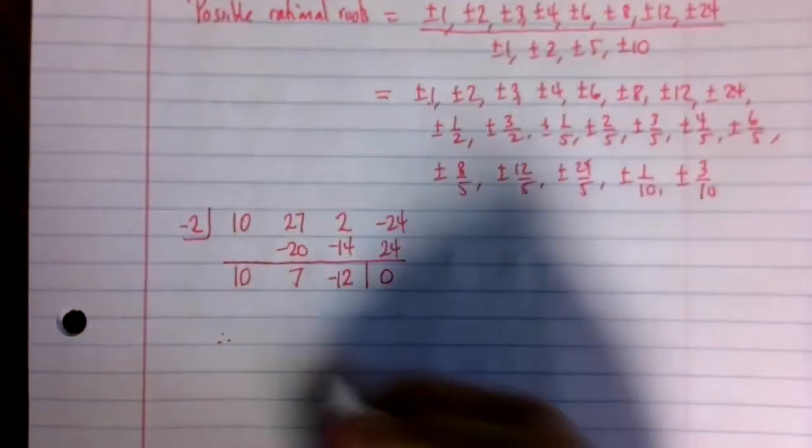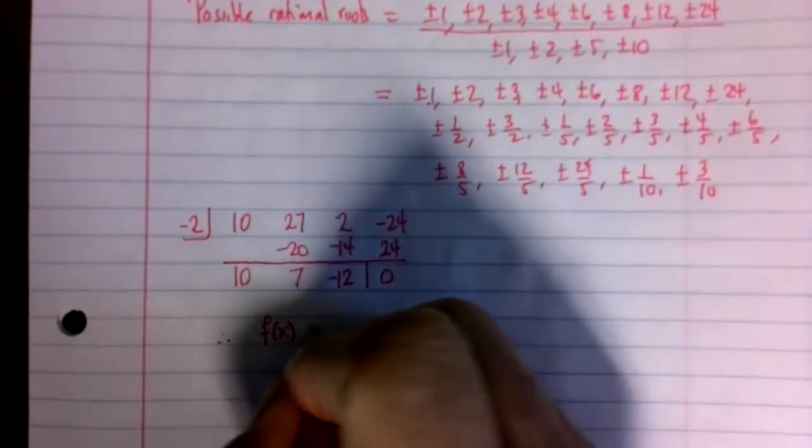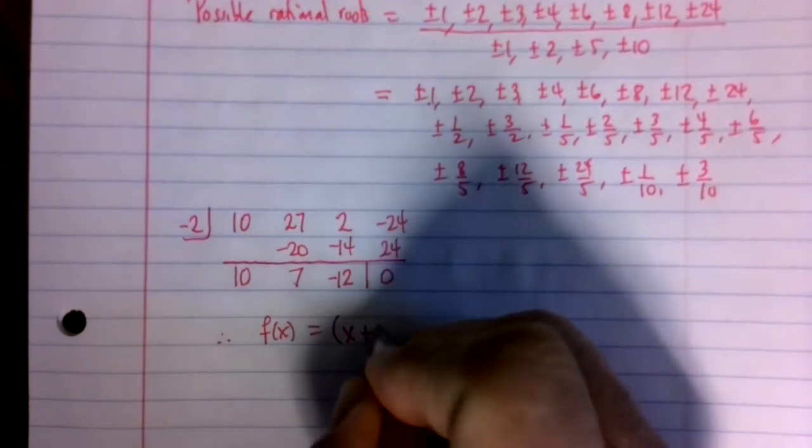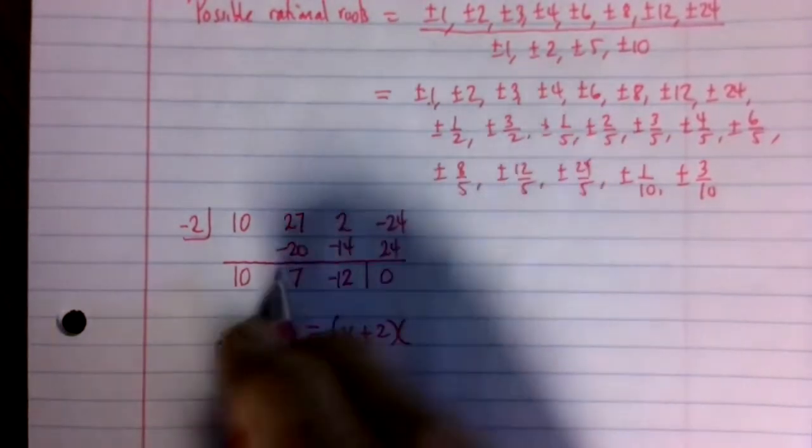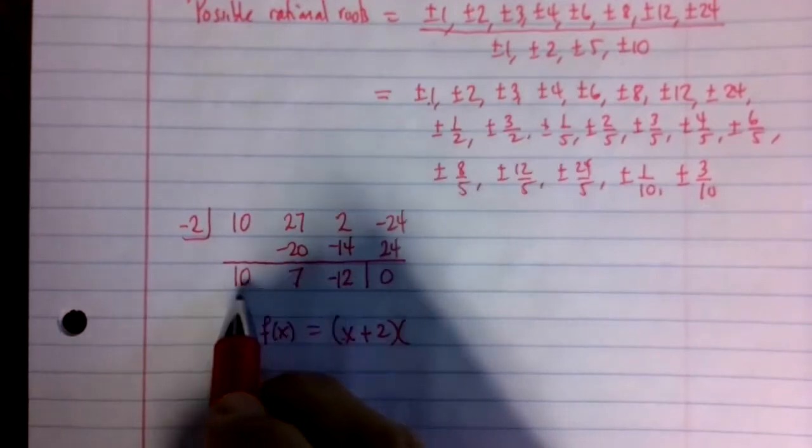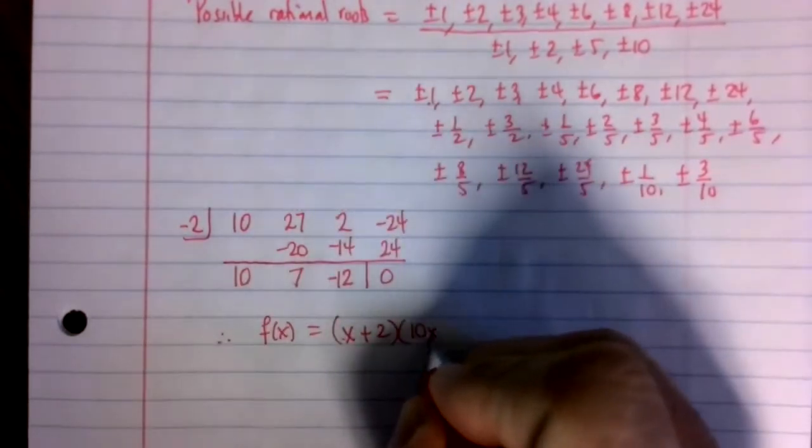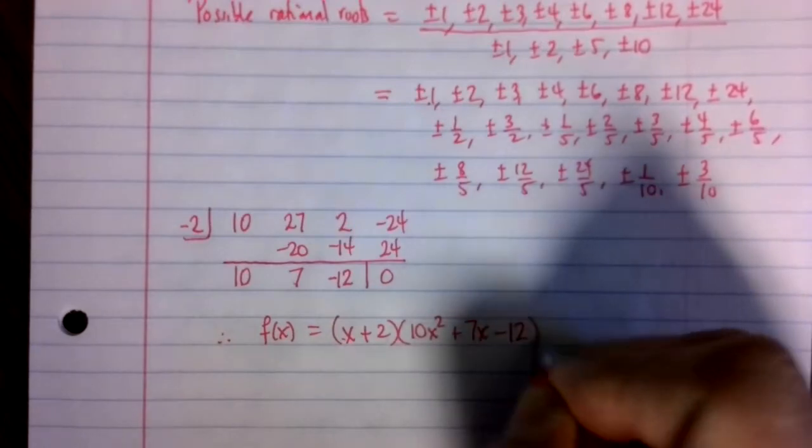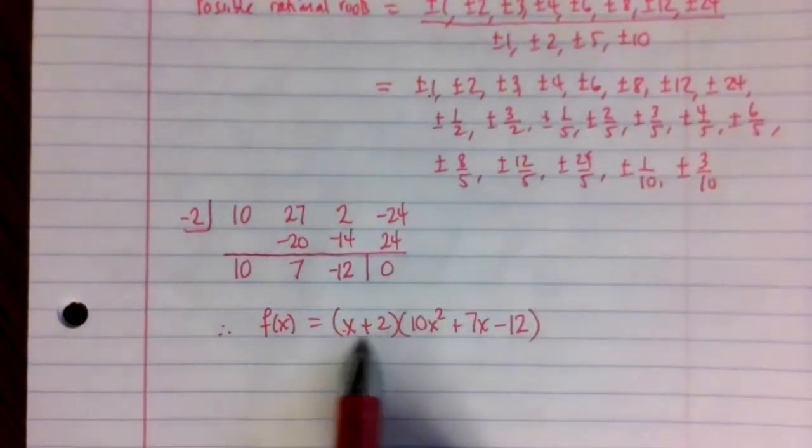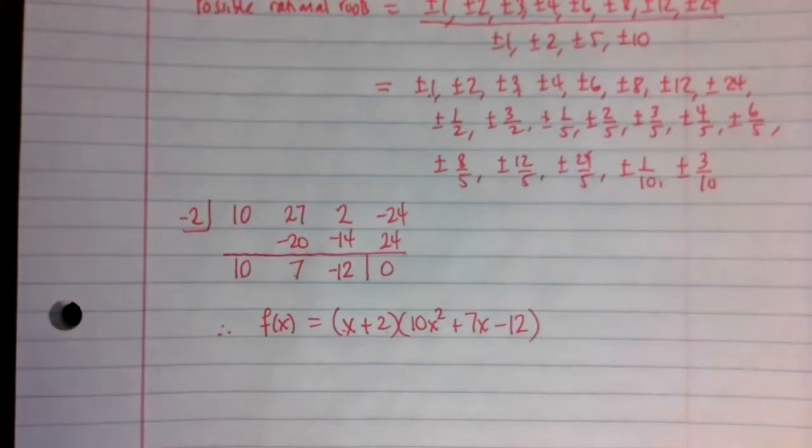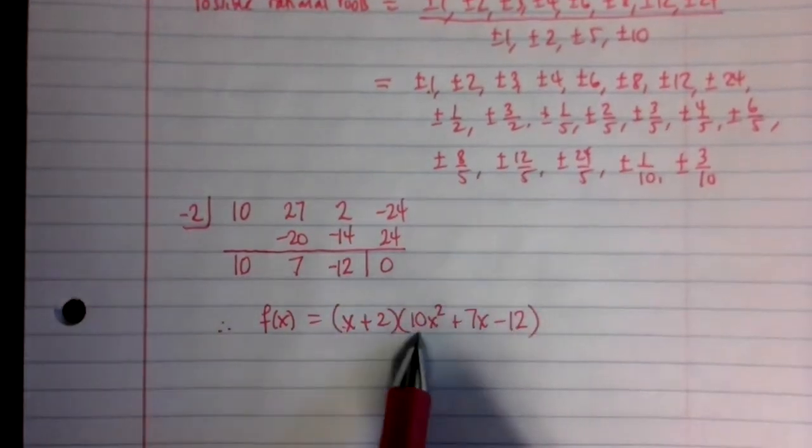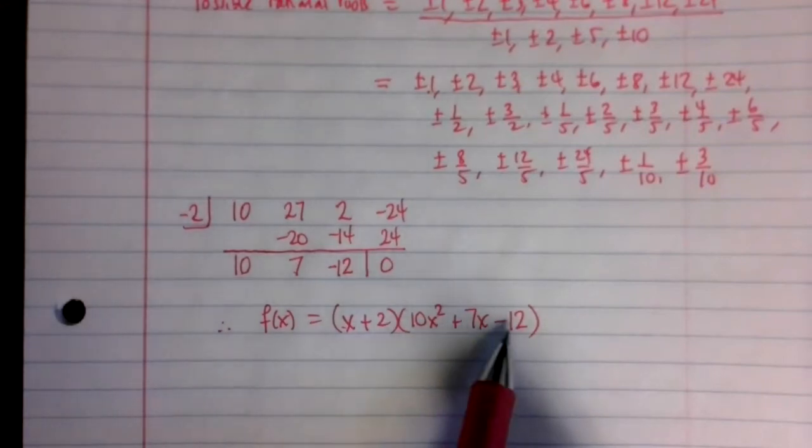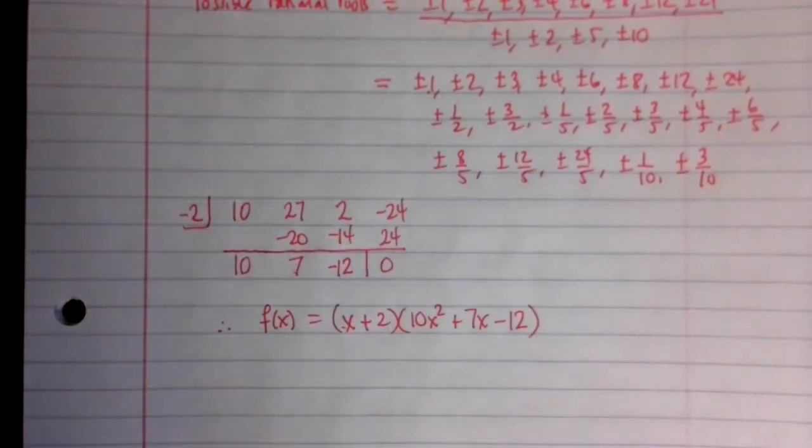And so what this has shown is that f(x) equals x plus 2. Negative 2 is a root of this. And then what I have left here is the quotient, so 10x² + 7x - 12. And so I have found the first root of this polynomial, and I get a cubic. Now here I've got a quadratic. When I get something down to a quadratic, if all else fails, I can use the quadratic formula to solve for x to figure out how to factor this.